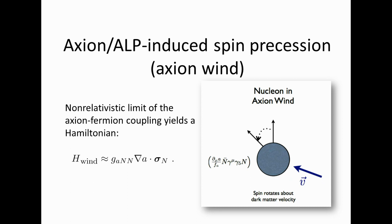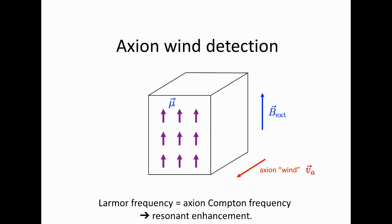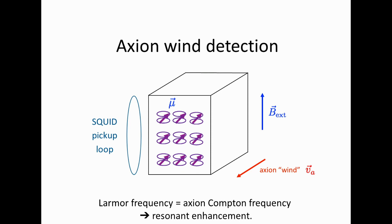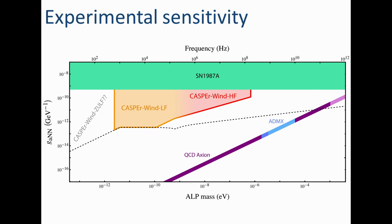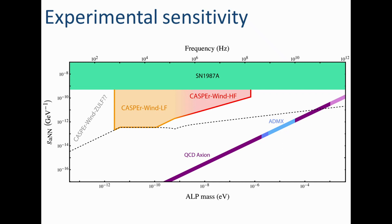The axion wind sets the transverse field, and there's some oscillation — you want the axion Compton frequency to match the Larmor resonance. Detection is via SQUID. They're using liquid xenon as the sensor, developing the experiment where you can polarize the xenon for very high polarizability. With CASPER wind, they're able to cut out many orders of magnitude for axion-like particles in parameter space, but not probe into the QCD axion space.